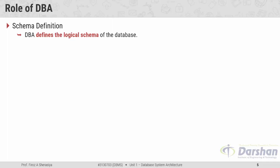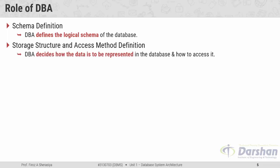Specifically, the DBA will decide how many tables the database will require, the name of each table, the different fields of each table, and the relationships between various tables. The second role is storage structure and access method definition. The DBA will decide how the data is to be represented in the database, in which form, and what methods are required to access the database.